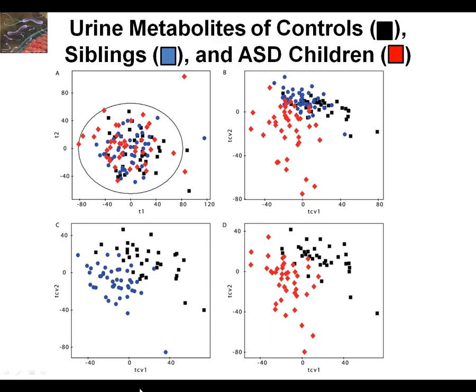To wrap up and conclude: the outcome of this microbiome and human genome interaction is the production of specific metabolites that can be a formidable tool to make the diagnosis of autism, because they can separate healthy siblings from kids with autism. It's a very powerful way to segregate the kids with autism from those without. I'll stop here so we can leave a little bit of time for questions.